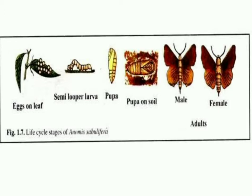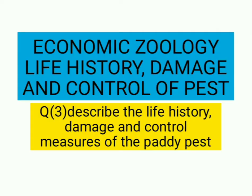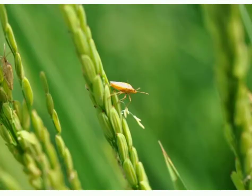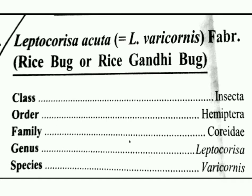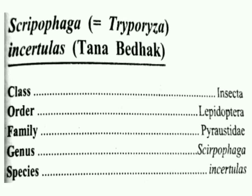Our third question is: describe the life history, damage and control measures of the paddy pest. The class of paddy pest Leptocorisa varicornis is Insecta, order Hemiptera, family Coreidae, genus Leptocorisa, species varicornis.